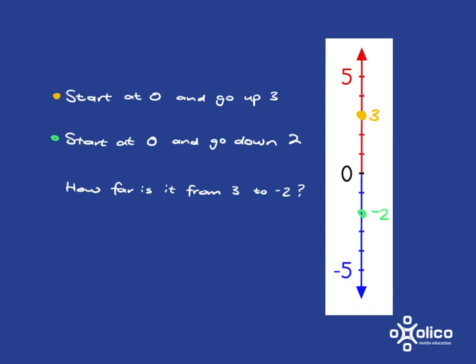you would end up over here at negative 5 on the number line. If you start at 2 on the number line and go down 2 steps, you'll end up at 0. If you start at negative 3 on the number line and go up 3 steps, you'll end at 0.